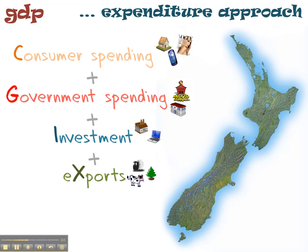Next we have exports — all the goods and services that we produce in New Zealand but then sell offshore to foreign clients. You could say that's all the expenditure that happens inside New Zealand. But the trouble is, when you add that up — C plus G plus I plus X — some of the goods and services we've bought were actually produced overseas. GDP does not include the value of goods and services produced overseas, so we've got to take away imports.